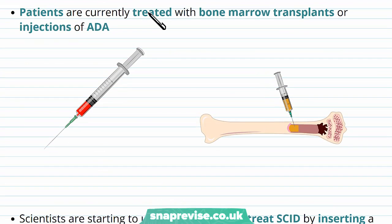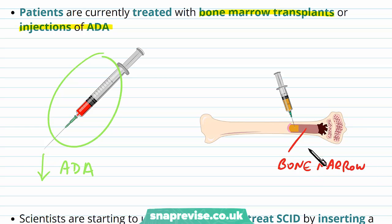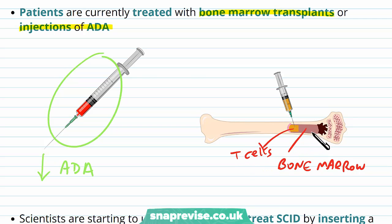The current treatment is with a bone marrow transplant or an injection of ADA. Injections of ADA involve inserting the ADA protein as a replacement therapy, just in the same way that we would inject insulin for diabetes. Bone marrow transplants involve taking the soft tissue within bone and replacing it with healthy bone marrow from a donor. The bone marrow is involved in making T cells as well as other blood cells like red blood cells, so it's then able to make more healthy immune cells.